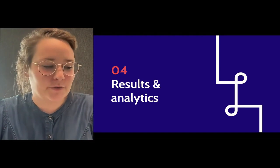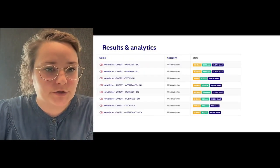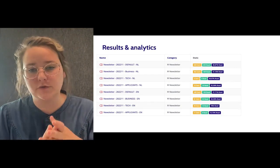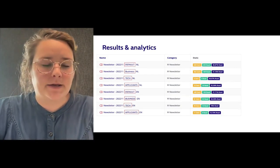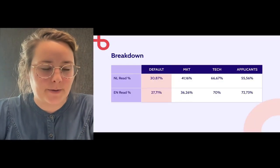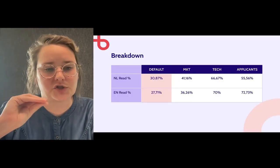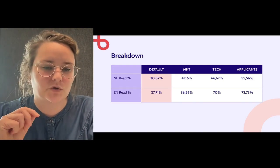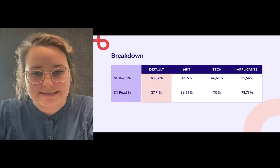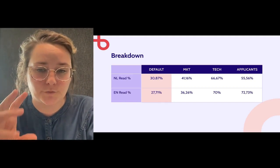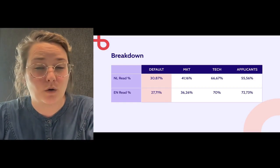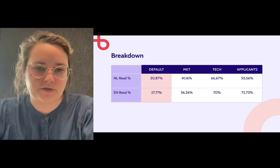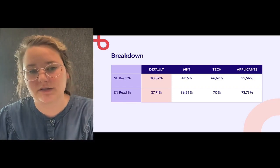I can say this, but of course we also have results and analytics. Here you can see the eight different newsletters — we have four segments and two languages, so we have eight different newsletters set up. What is the breakdown? It's divided in Dutch and English. The default version is around 30% open rate. The marketing segment is 10% more, so around 40%. Then you have tech, which is almost 70%. And then you have applicants, which is around 60%. So the difference between default and the other segments is gigantic.